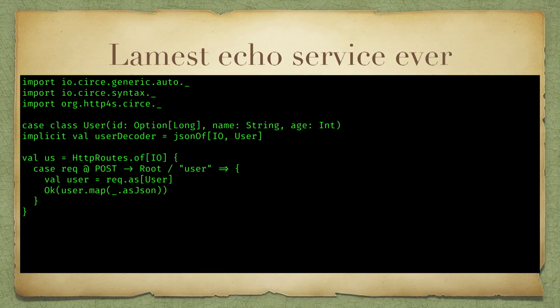The monad in question here is the Cats IO effect monad. One of the things we don't talk about enough when we talk about monads, especially effect monads, is the fact that most of them are failure monads. They model failure as well as having some effect like talking to the network or the disk. That's also why I map over the result in the last line before returning it with an OK status — because it's just like mapping over an Option when you have a value that might or might not exist.